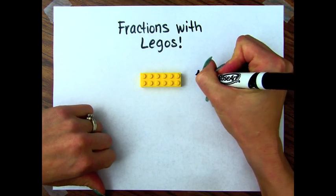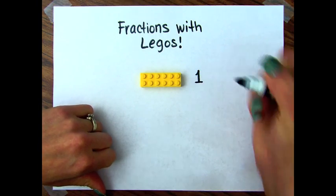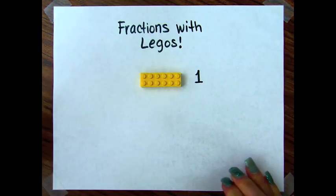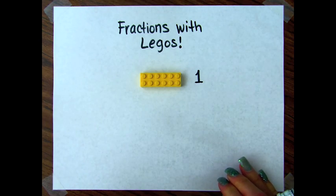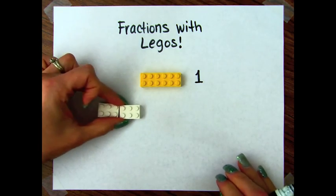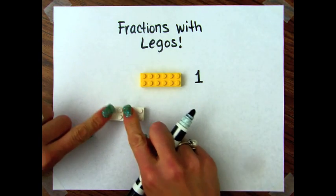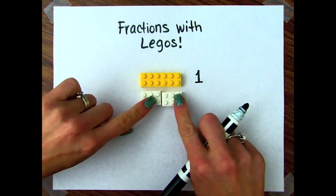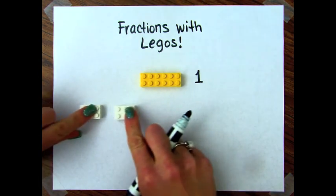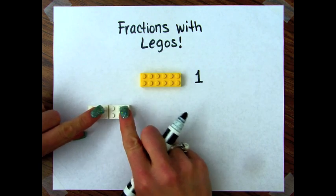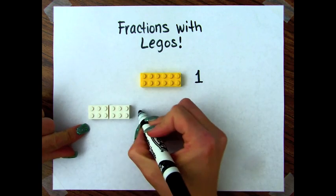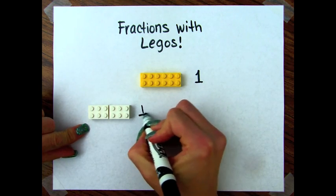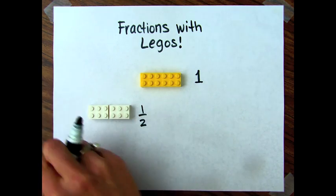We're going to use this Lego as the unit — that's going to represent one whole unit. Therefore, these two together would each represent a half. So I'm just going to write a half. Each of these is a half.